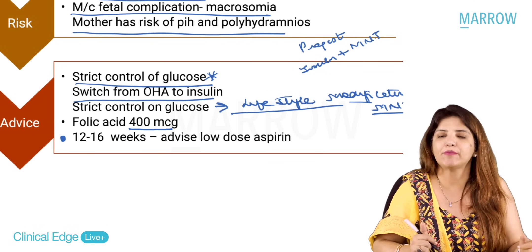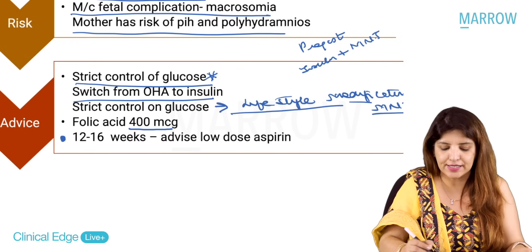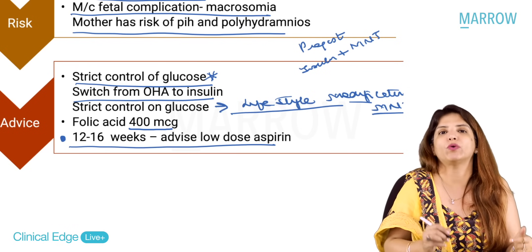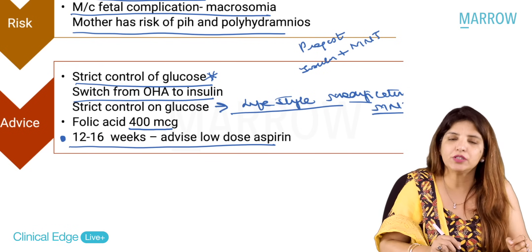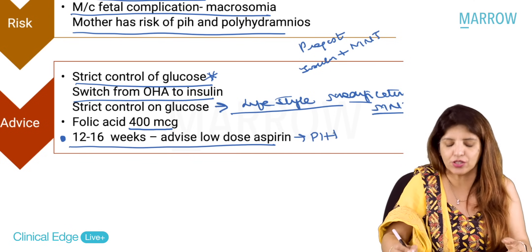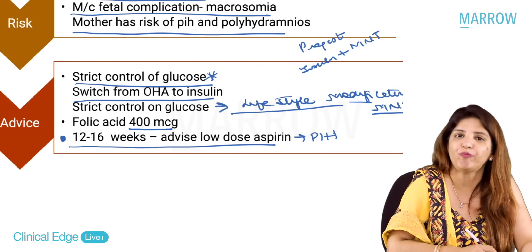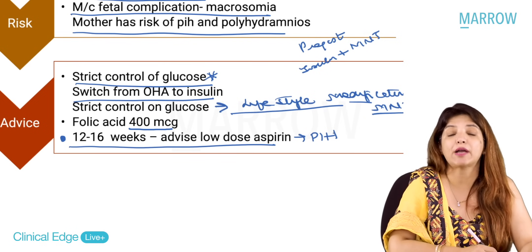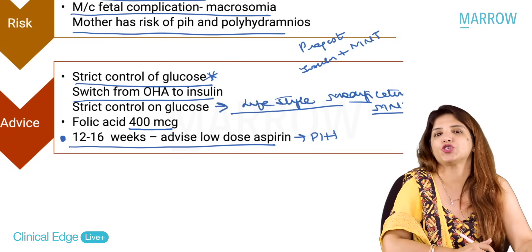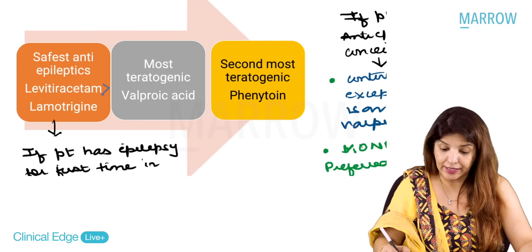Also advise diabetic patients to take 400 micrograms of folic acid. Additionally, as per the mnemonic 'All Hypertensive Mothers Can Die,' diabetic patients also require low-dose aspirin from 12 to 16 weeks until 36 weeks of pregnancy to prevent PIH.